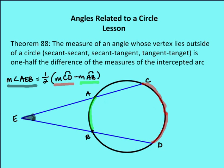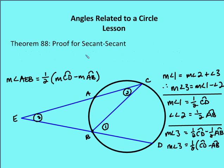Let's prove the secant-secant case. We want to prove that the measure of angle AEB (angle three) equals one-half the measure of arc CD minus the measure of arc AB. Using the exterior angle theorem, the exterior angle one equals the sum of the two remote interior angles three and two. By subtraction, the measure of angle three equals the measure of angle one minus the measure of angle two. Angle one is an inscribed angle equal to half its intercepted arc CD, and angle two is an inscribed angle equal to half its intercepted arc AB.